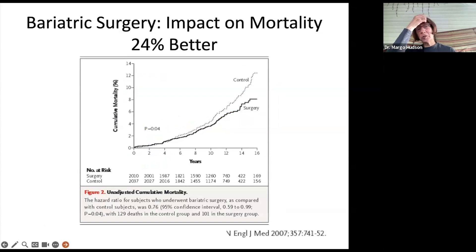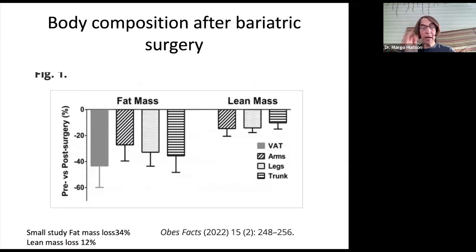How does bariatric surgery compare to semaglutide in terms of mortality? Surgery showed a 24% better mortality benefit — pretty impressive. Body composition data after bariatric surgery shows fat mass loss of about 34% and lean muscle mass loss of about 12%, similar to tirzepatide. The fat is lost primarily from the trunk and visceral adipose tissue, while the greatest muscle mass loss is in the arms.